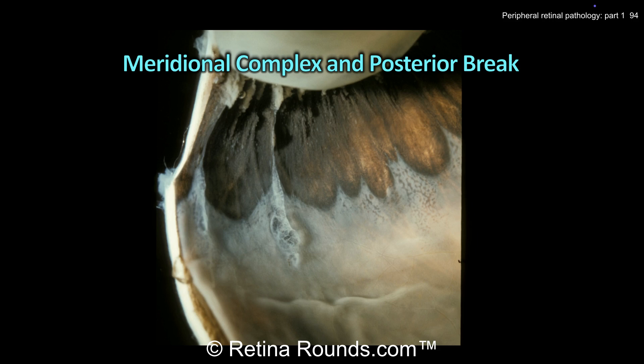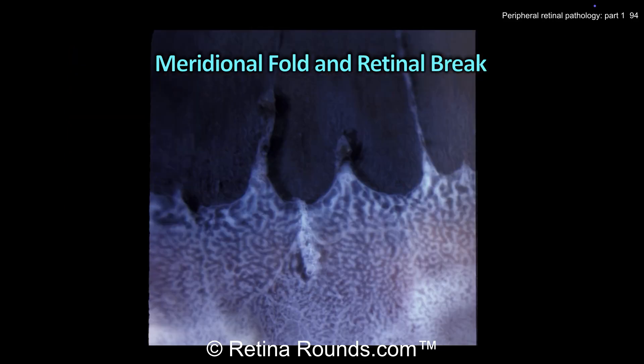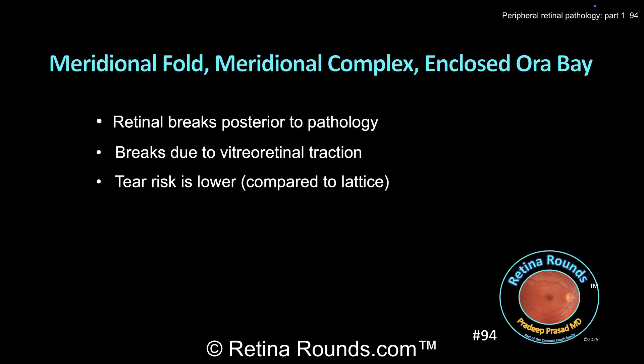Sometimes a meridional fold, part of a meridional complex, may have associated cystic spaces, as shown in this photo. Here you can see two meridional complexes, both associated with small operculated retinal holes just posteriorly. And here we have a meridional fold in an ora bay between two dentate processes, with a small flap tear at the posterior edge. Meridional folds, complexes, and enclosed ora bays may all be associated with retinal breaks that usually appear just posterior to these areas of pathology. Tears associated with these lesions appear to be less frequent than, for example, tears associated with lattice degeneration.